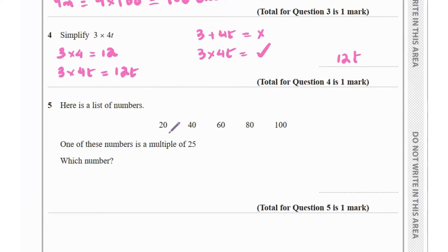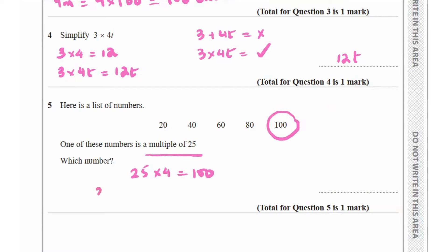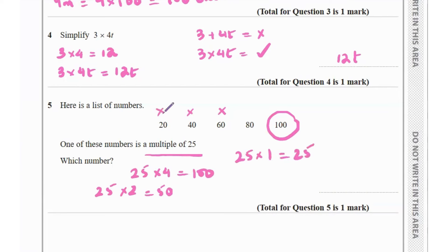Question 5 says here is a list of numbers: 20, 40, 60, 80, 100. One of these numbers is a multiple of 25. We know 25 times 4 is 100, so 100 is the answer. Checking: 25 times 2 is 50, so 60 can't be a multiple of 25; 40 can't either; 25 times 1 is 25 so 20 can't be; and 25 times 3 is 75, so 80 is also not a multiple. Therefore 100 is the multiple of 25 from this list.